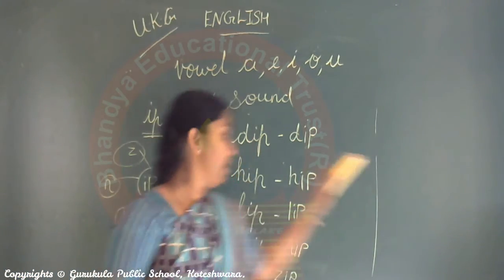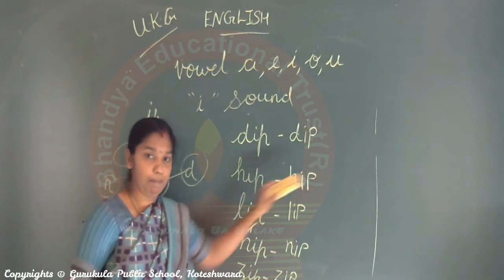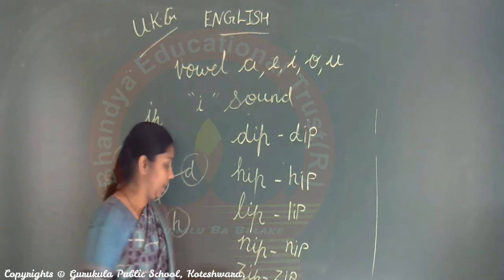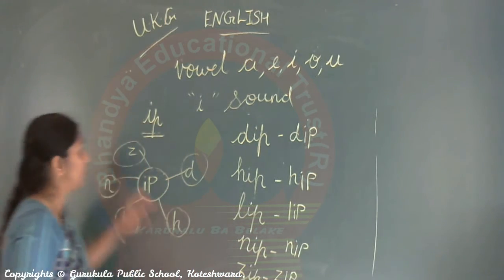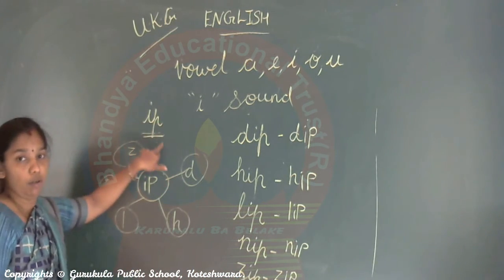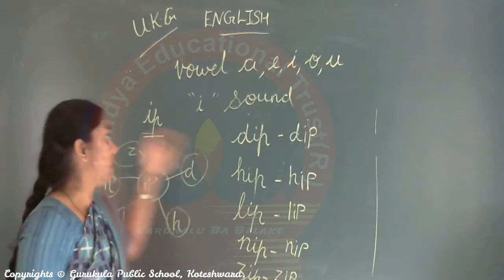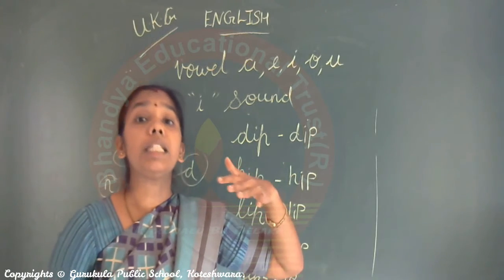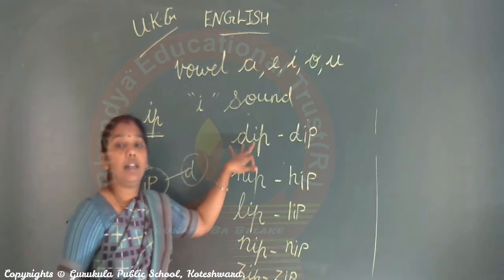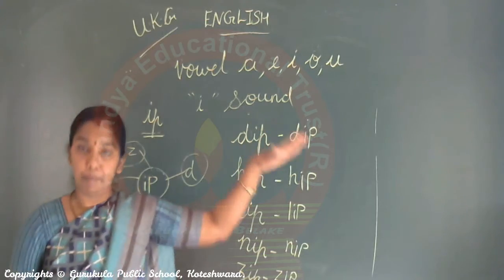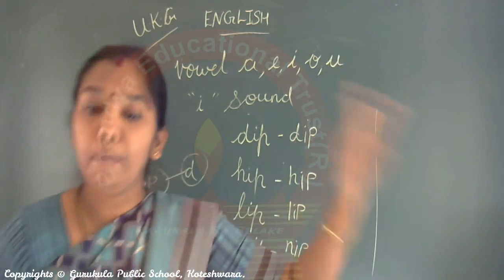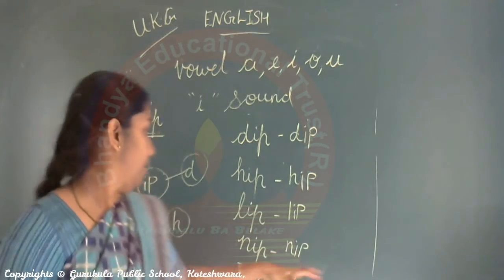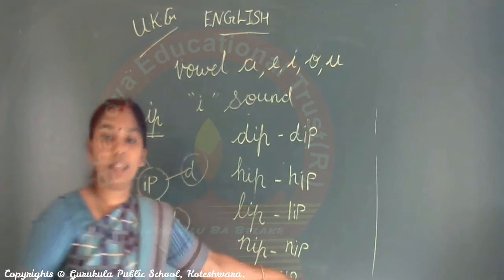So our IP words are: D-I-P - Dip, H-I-P - Hip, L-I-P - Lip, N-I-P - Nip, Z-I-P - Zip. The phonics sound is 'I'. So: Dip, Hip, Lip, Nip, Zip.